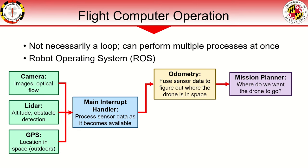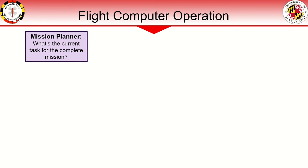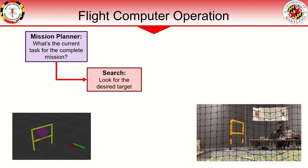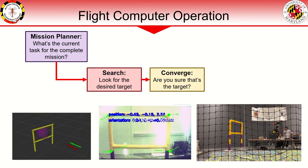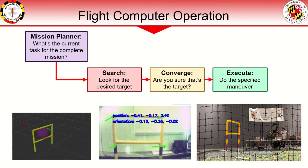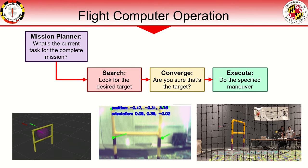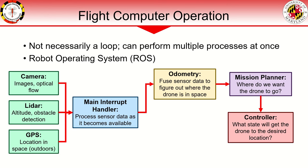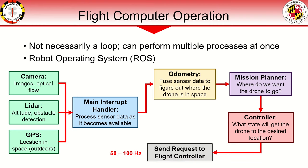Once the drone knows where it is, a mission planner can be used to decide where to go next. It must first decide what the current task is — for example, flying through a window. The mission planner may then request that the drone search for the target by either flying forward or turning around. Once the target is identified, it must converge on it to ensure it has actually found the target. Finally, the desired maneuver for that target can be executed, and the mission planner decides what to do next. A controller is used to generate requested vehicle state setpoints based on where the mission planner wants the drone to be and where the odometry thinks the drone is. These requests are then sent to the flight controller at a rate of about 50 to 100 times per second.